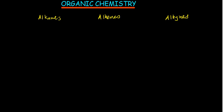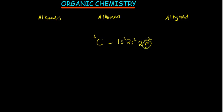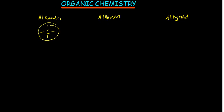Carbon has the atomic number six, giving it six electrons. Its electron configuration is 1s² 2s² 2p², meaning four electrons have not filled up the outer orbital. For the orbital to be completely filled, carbon needs four more electrons. In alkanes, carbon reacts with four different atoms, so we call it a saturated hydrocarbon — all orbitals are filled up and you can no longer add anything else.